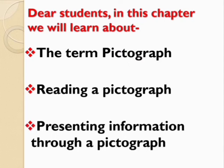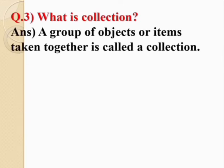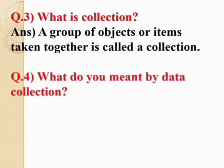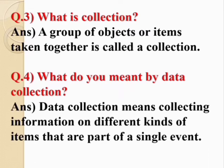What is a collection? A group of objects or items taken together is called a collection. What do you mean by data collection? Data collection means collecting information on different kinds of items that are part of a single event. It is called data handling.